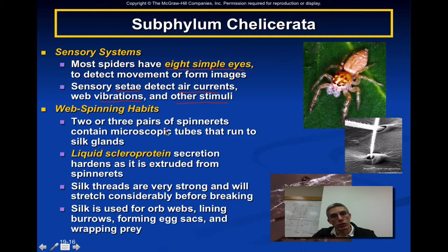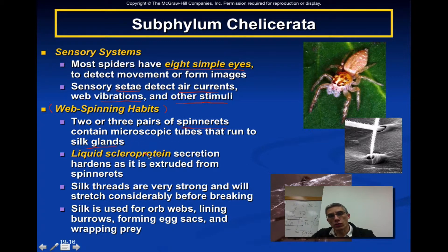Spiders have a very elaborate web-spinning mechanism. Most spiders will have between two or three pairs of spinnerets, which contain the silk glands. When they produce the silk, it is secreted as a liquid scleroprotein — a protein-type material — and once it makes contact with air, the material hardens and forms the typical web we recognize in the environment.